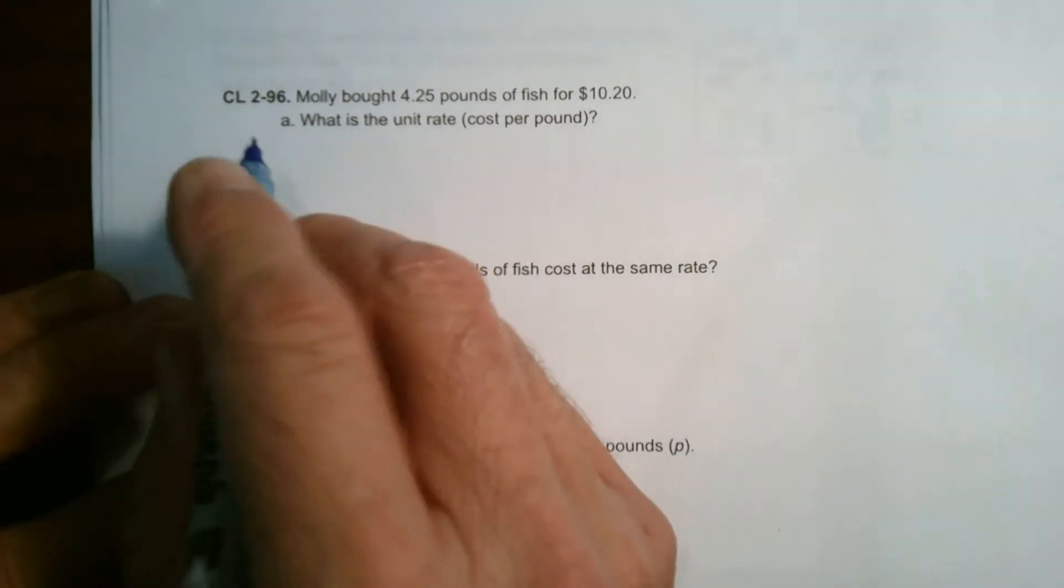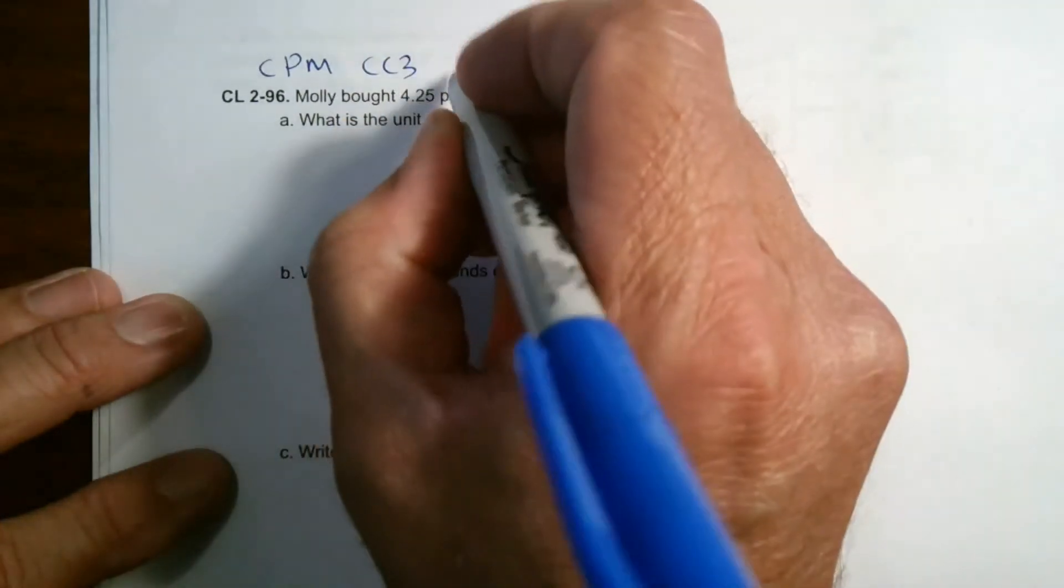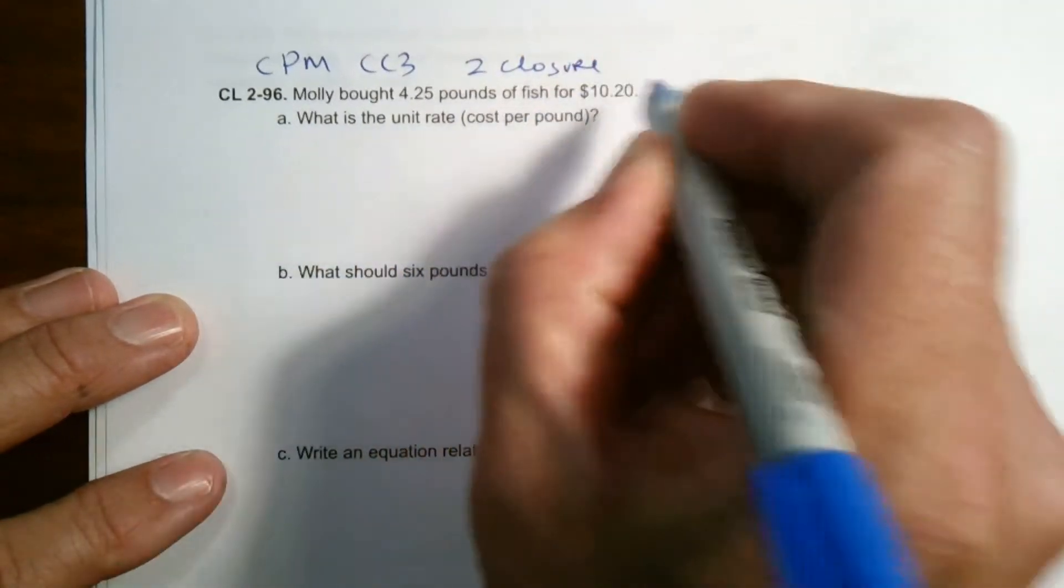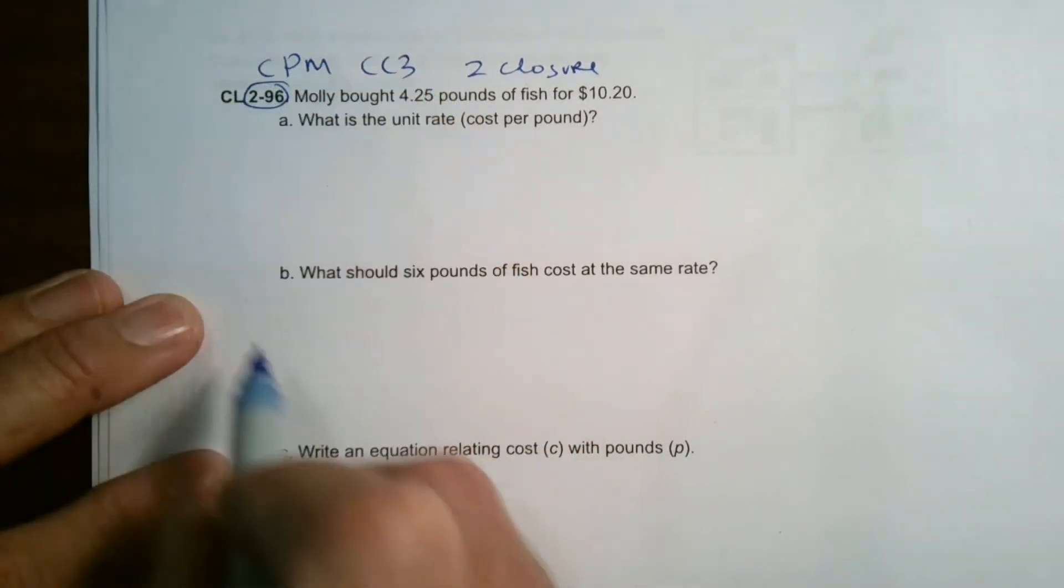So this is a closure question. I'm taking this from CPM course three, and this is chapter two closure. Okay. So let's read the question. Number 96 is what I'm looking at.